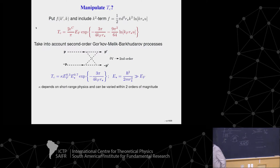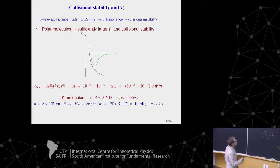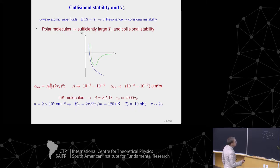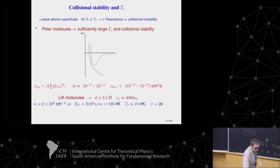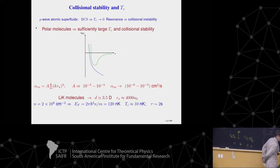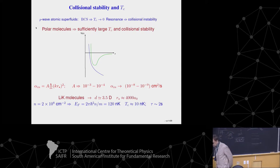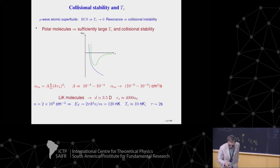This is justified by the following: if I consider lithium-potassium molecules where D = 3.5 Debye, and density is 2×10⁸ particles per square centimeter in 2D, then the Fermi energy is 120 nanokelvin, and the transition temperature T_c is 10 nanokelvin. In present experiments, very many people in this world obtain temperatures of 20, 30, 10 nanokelvin, or even lower. This is already the temperature at which you can do interesting physics.